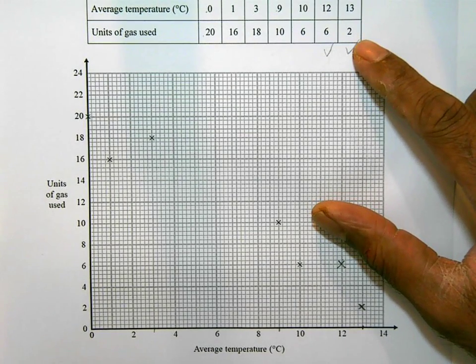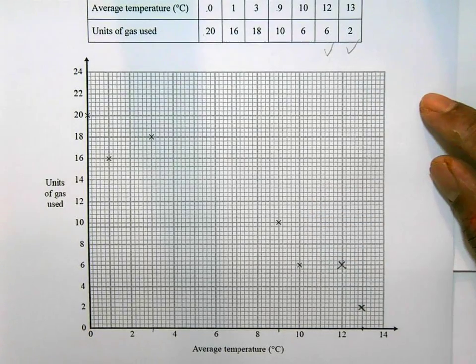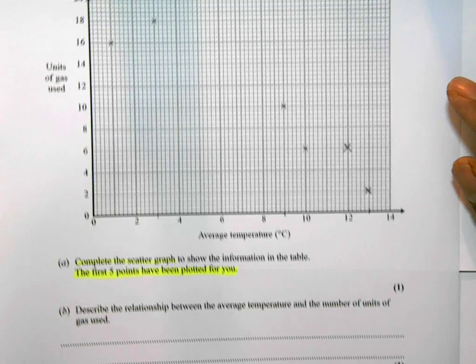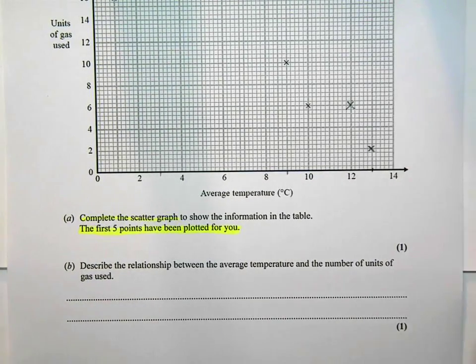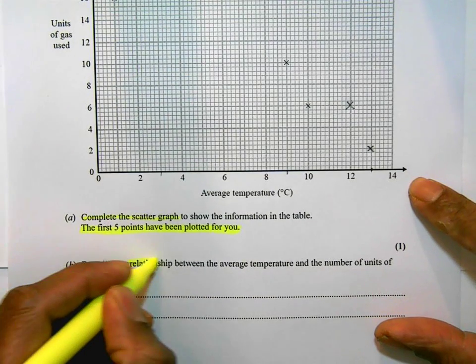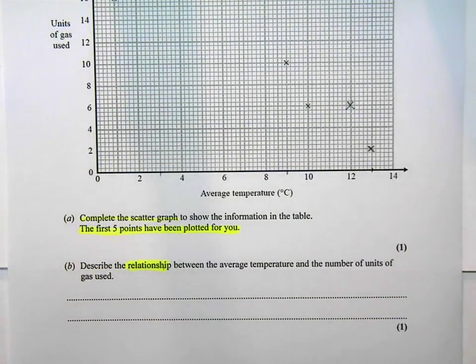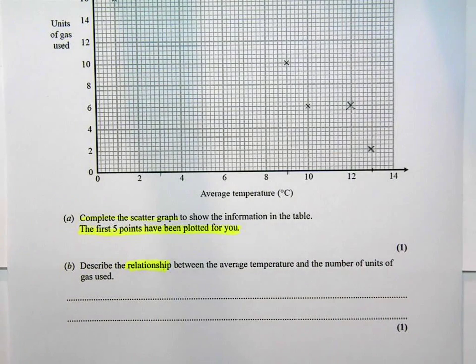Let's look at part B. Part B says describe the relationship between the average temperature and the number of units of gas used. So it's the relationship that they're talking about. Now, you could write a lot of things here. You could write something like as the temperature gets higher, the number of units of gas used gets lower. But one of the things I want to think about is looking at the scatter graph, what type of correlation is there?